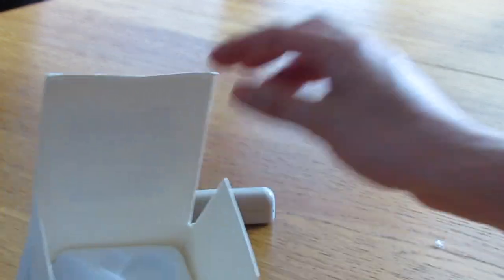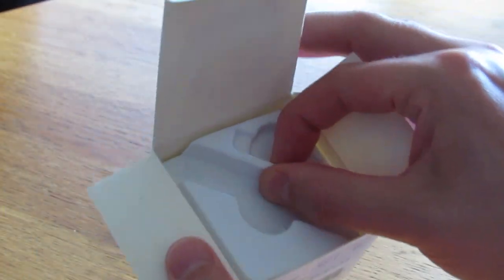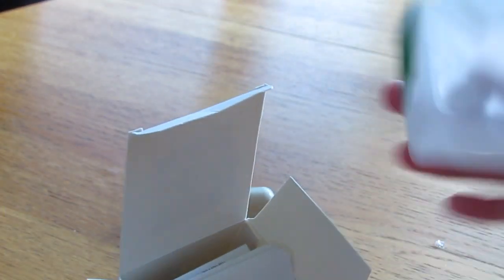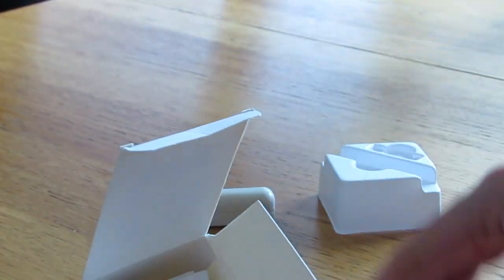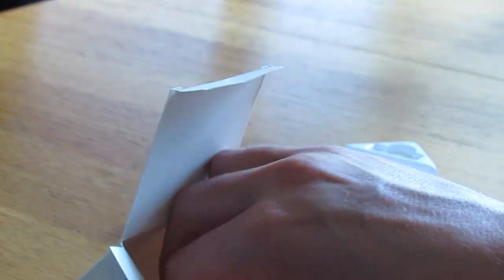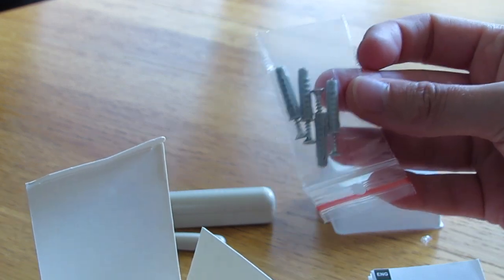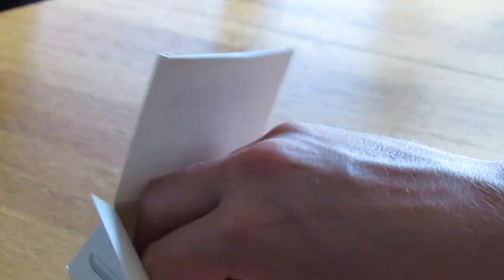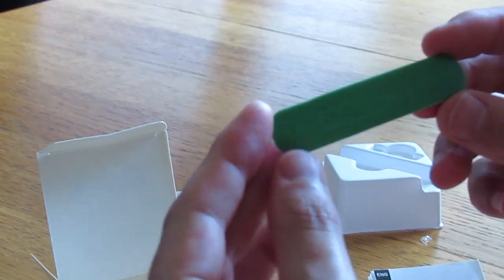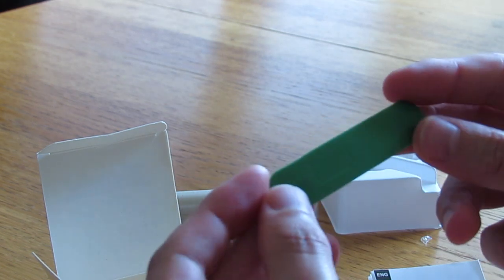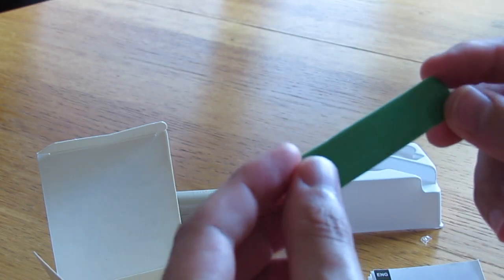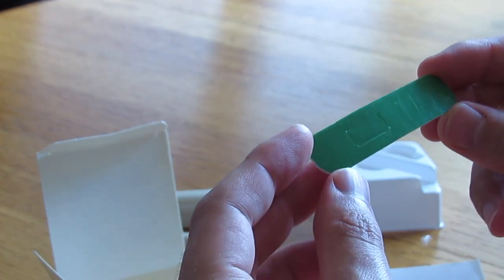We'll just have a look, see what else is in the box. Some instructions, some more instructions. It looks like a screw fixing kit to connect to your door or window frame, and that looks like adhesive if you don't want to put screws into your walls and windows.